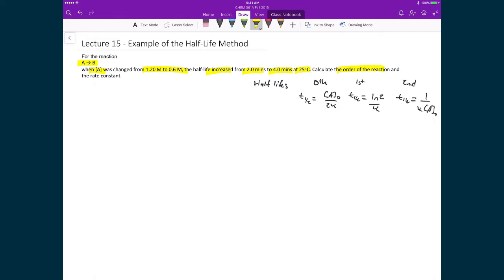To do this, the strategy we're going to utilize is that we're going to calculate using these expressions that determine the half-life of a reaction depending upon its order. We're going to calculate, based on the data that's provided, what is the rate constant K. If the rate constant K is consistent across these two data sets, our 1.2 molar and our 0.6 molar with 4 minutes, and if our K is constant, then that becomes the order of the reaction.